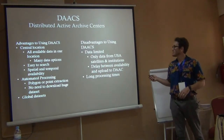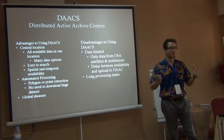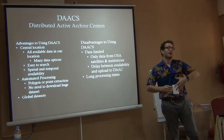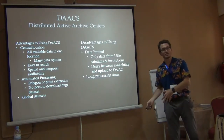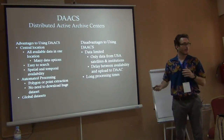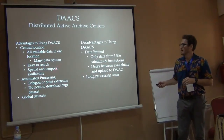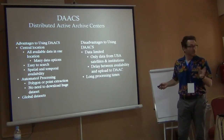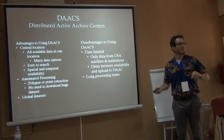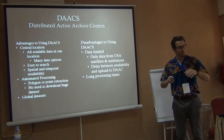So the DACs — they're Distributed Active Archive Centers. The advantage to using these is that you have all of this data in one location. So instead of trying to figure out where the MODIS is, where the Landsat is, where the classifications and vegetation data are, it's all in one spot. You just go to one website, search for what you want, and it comes up. You have a lot of different options to choose from and it's relatively easy to search — you can search spatially and temporally. You can look for Rwanda in 2000 or Tanzania in 1995, and it will give you all the data sets for that place at that time.